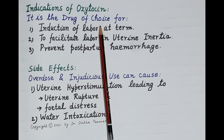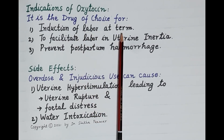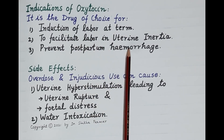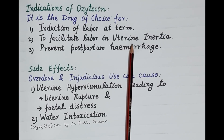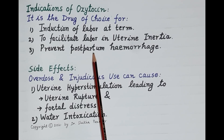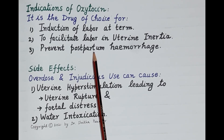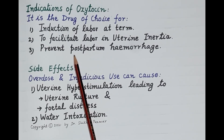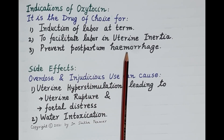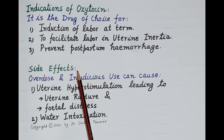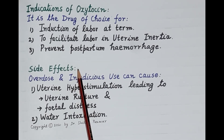Oxytocin is the drug of choice for inducing labor at term and is also useful in uterine inertia to facilitate slowly progressing labor. Since it is a powerful uterine stimulant, it contracts uterine muscles, causing compression of blood vessels and preventing bleeding. Therefore it is very useful in preventing postpartum hemorrhage.